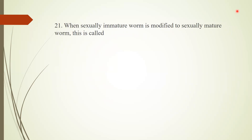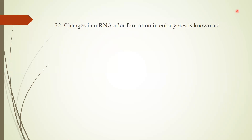Question 21: When a sexually immature worm is modified to a sexually mature worm, this statement refers to the process of epitoky, or the phenomenon of epitoky. Question 22: Changes in messenger RNA after its formation in eukaryotes is known as post-transcriptional modification — transcription is the formation of mRNA, and these changes are called post-transcriptional modification.